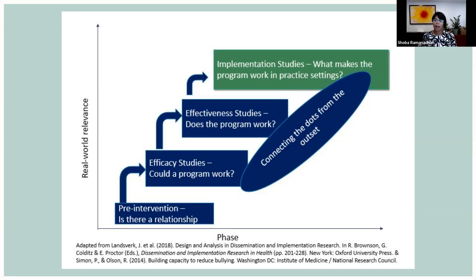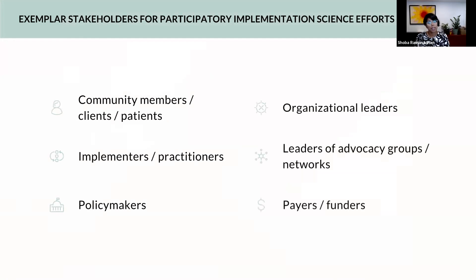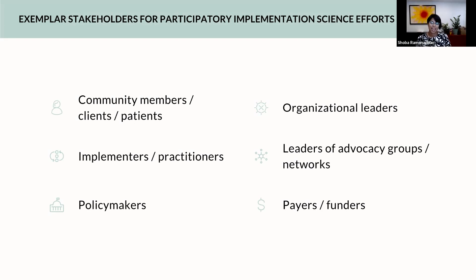In the same way, we can think about stakeholder engagement from the earliest stages of developing our evidence base, so that what we produce — we being investigators and stakeholders together — can be much more likely to be usable and useful in practice. We can think about a range of stakeholders that might be part of a participatory implementation science effort, and you can think about how you might want to match specific stakeholders based on where you're intervening, what your implementation effort looks like, who brings the right expertise, and whose needs you fundamentally need to meet.